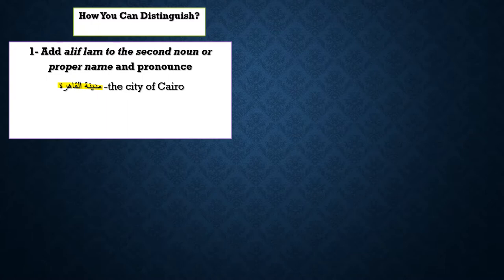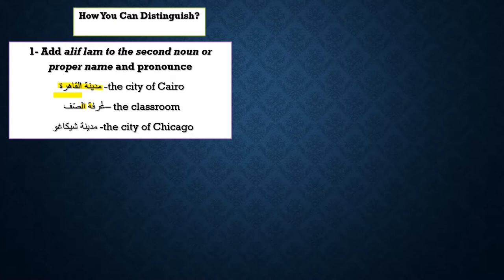So you add alif-lam to the second noun, or the second noun could be a proper name. For example, 'ghurfatu al-saff' — you don't say 'ghurfa al-saff,' which has no meaning. The correct pronunciation is 'ghurfatu al-saff,' the classroom. For a proper name: 'madinatu Chicago' — you never say 'madina Chicago.' So if you're familiar with Arabic pronunciation, you can tell it's ha or ta marbuta by following rule number one.